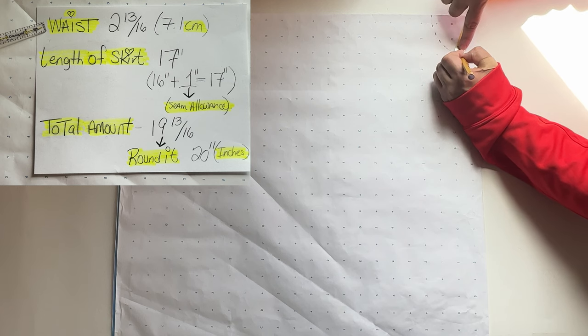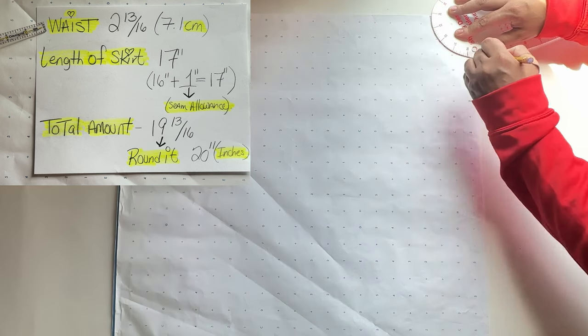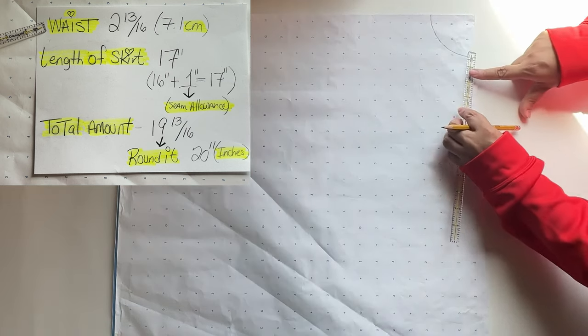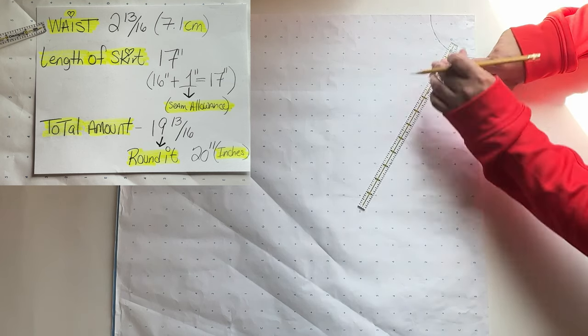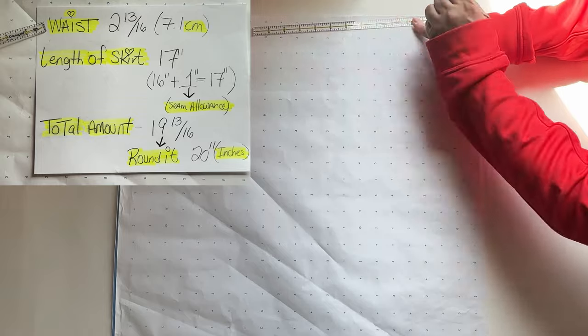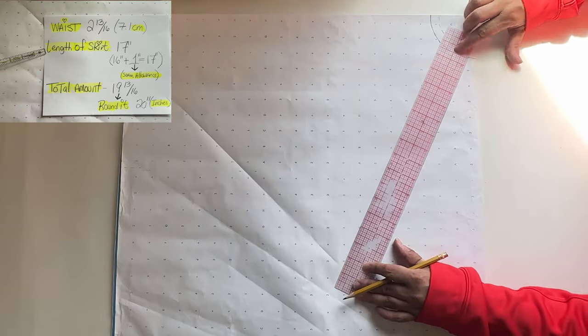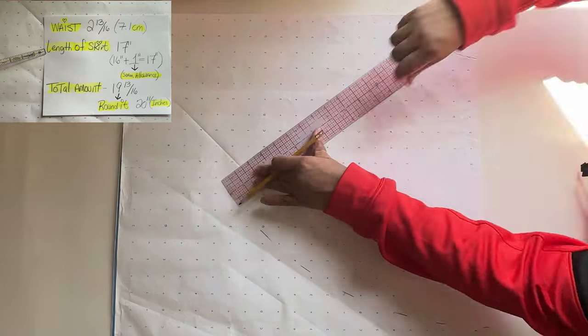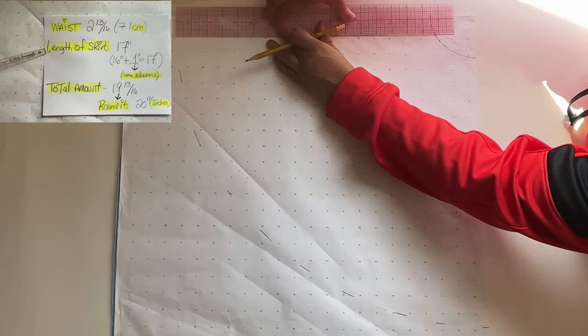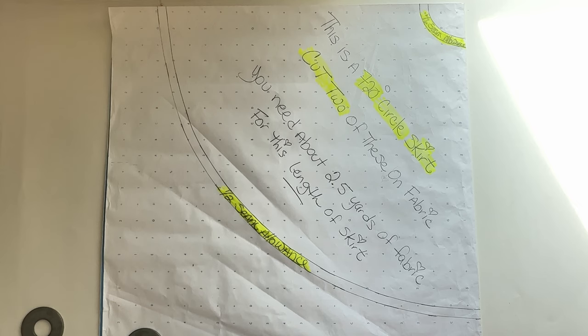I'm going to mark the measurements we did earlier to make the skirt. The waist radius is 7.1 centimeters on top, then put a half-inch seam allowance on top of that waist radius. After that I'm going to go down 16 and a half and make a circle—the 16 inches is for the skirt and a half-inch is for the seam allowance.